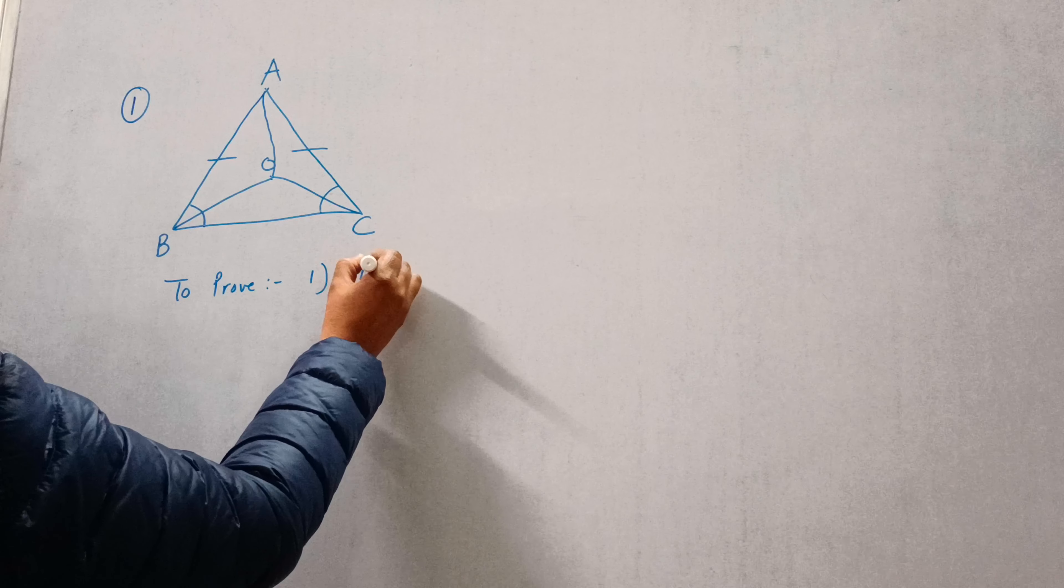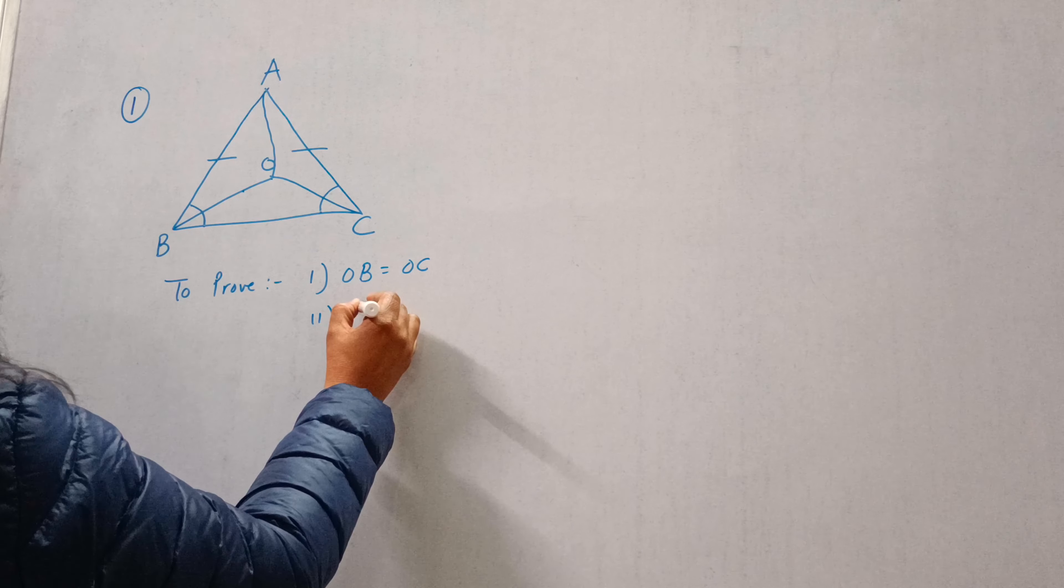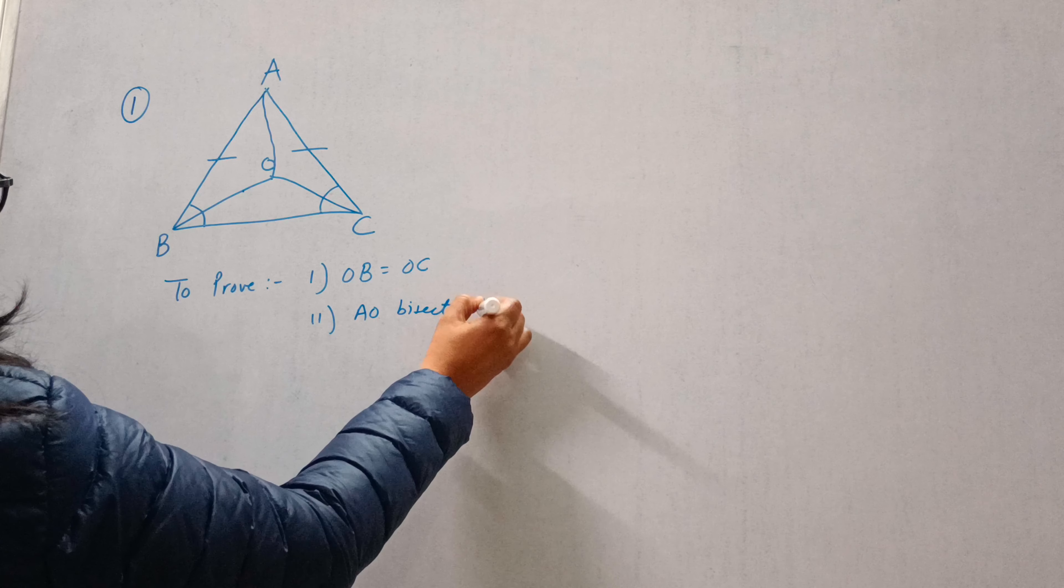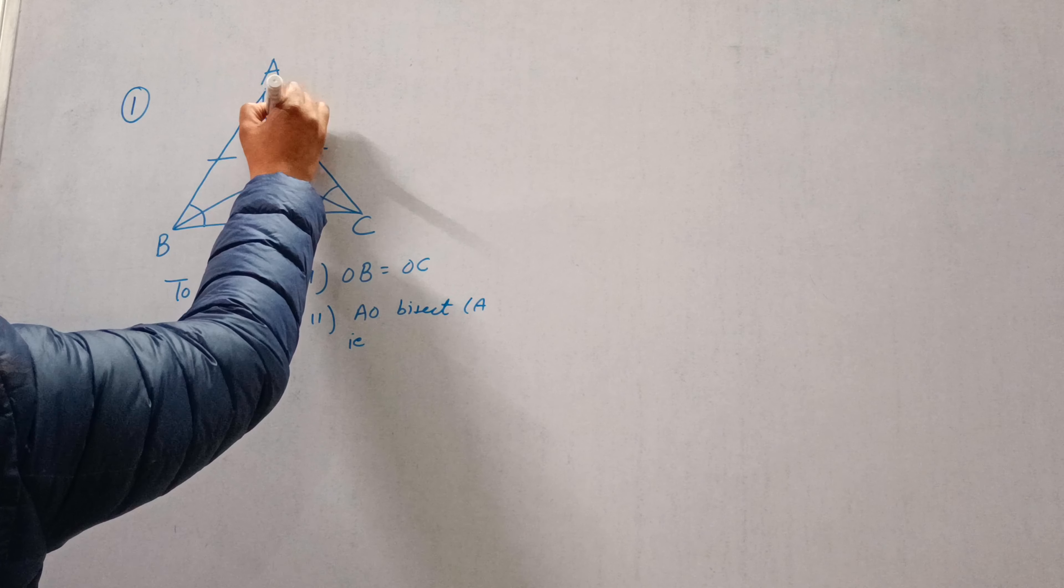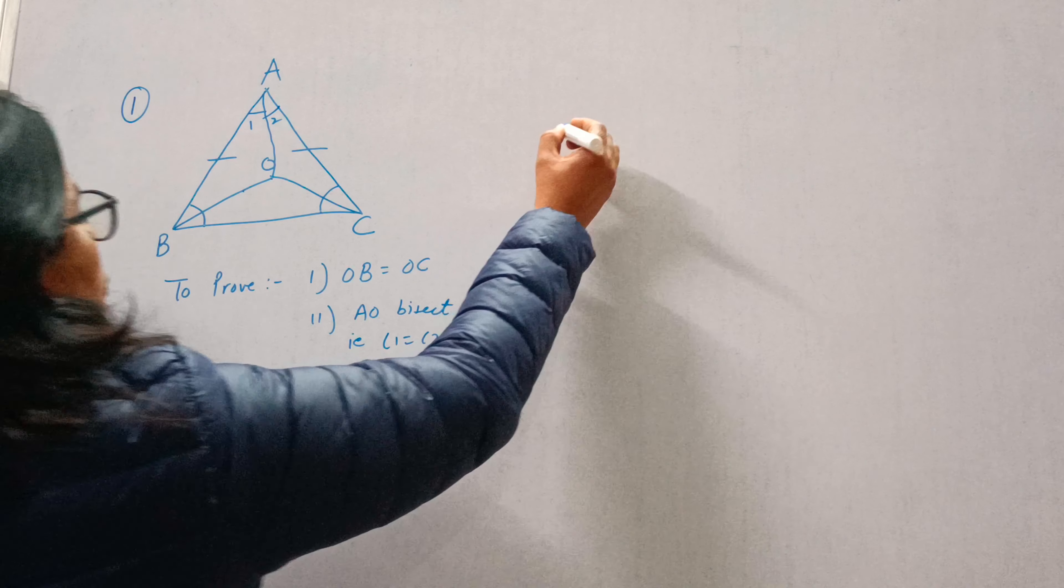OB is equal to OC. This is one. And second, AO bisects angle A, that is angle 1 is equal to angle 2. Okay, so let's prove it.